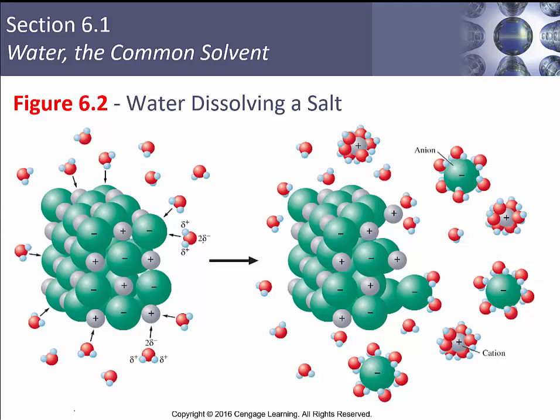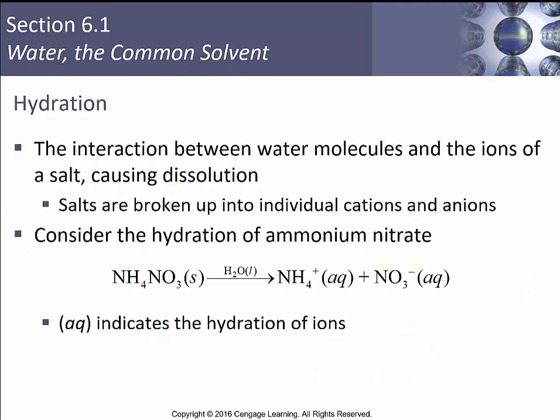Water is going to be the solvent here. We've got solvent-solute interactions that are going to be stronger than the interactions between the ions making up the solid. So the lattice energy is less than the energy gained from forming new interactions between the anion and the partial positive end of water, and between the sodium cation and the partial negative end of water. Many water molecules surround the anion and many surround the cation, so the interaction between water molecules and the ions of salt is what causes dissolution.